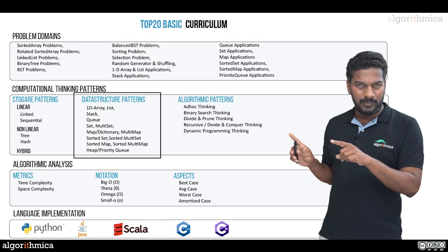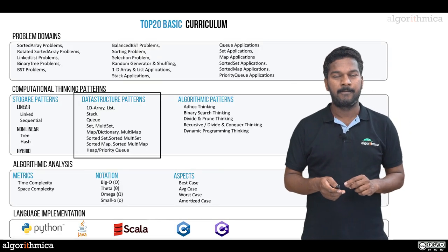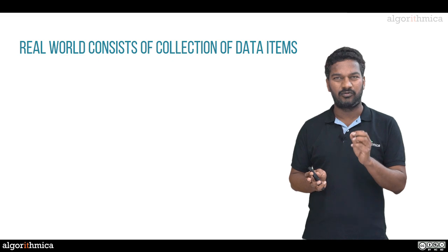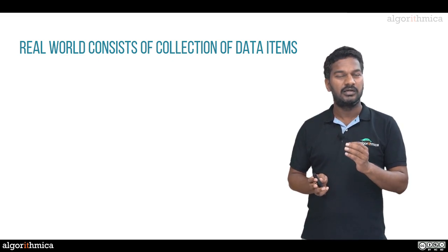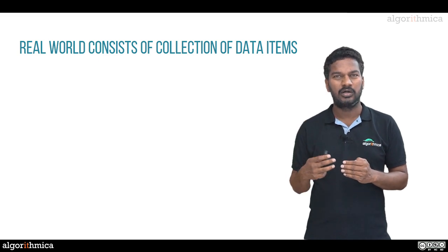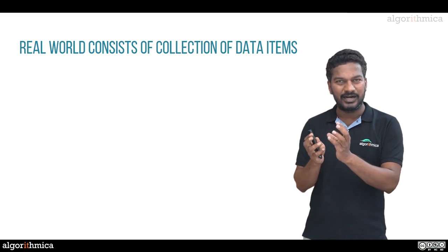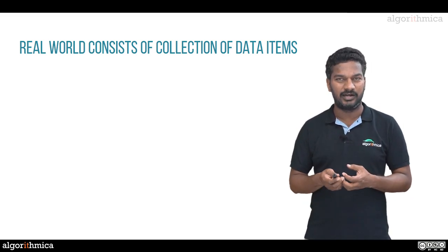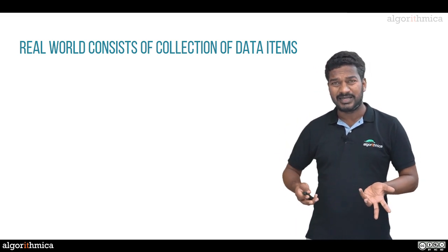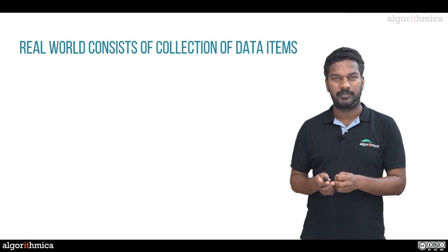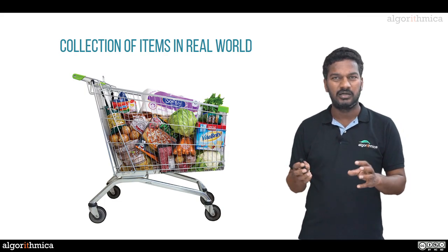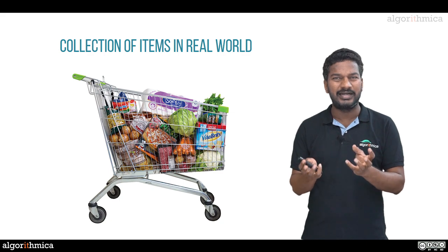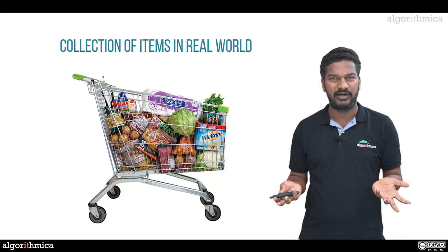This is all part of the second phase of our framework. To understand data structures, we first look at real-world motivation. The first use case is collections of data items. In the real world you see lots of collections — not just one item but groups of items. A classic example: when you go to a shop, you take a shopping cart and keep adding items. All those items together form a collection.